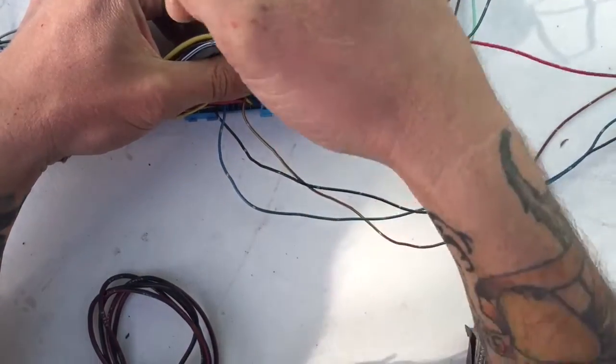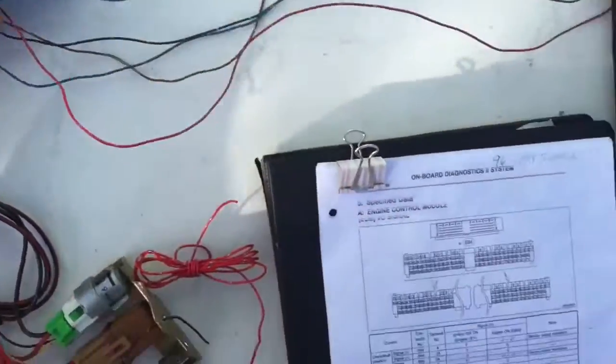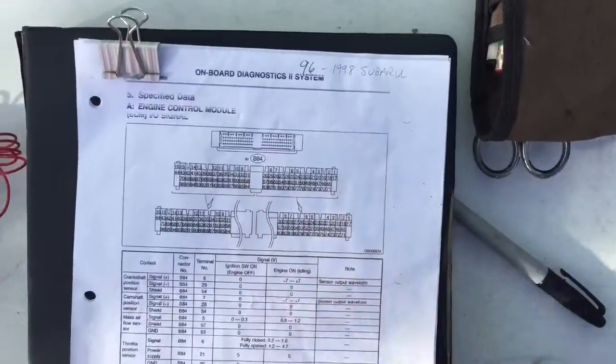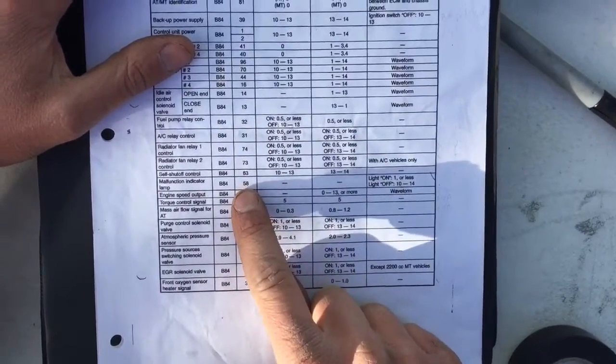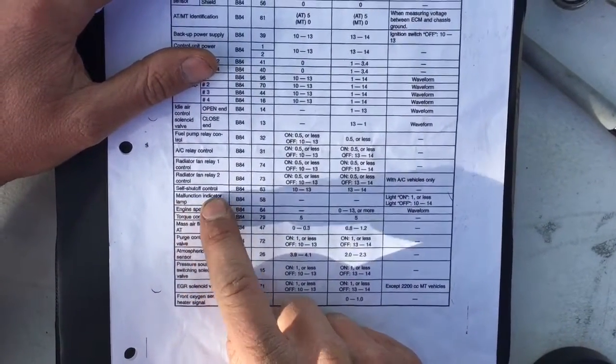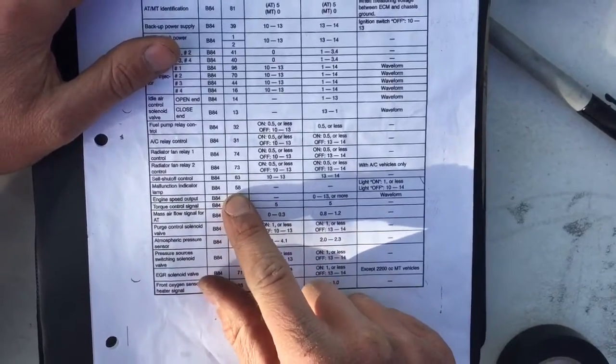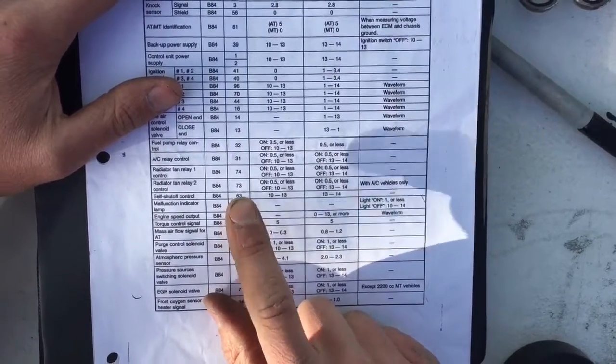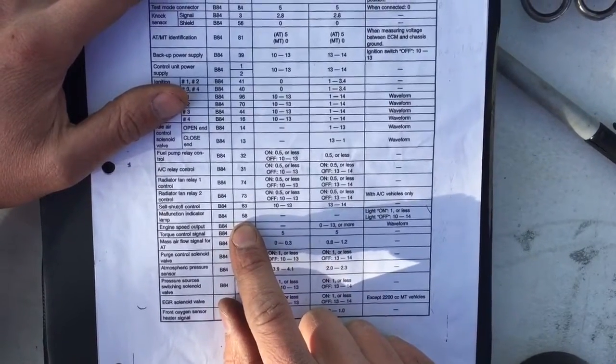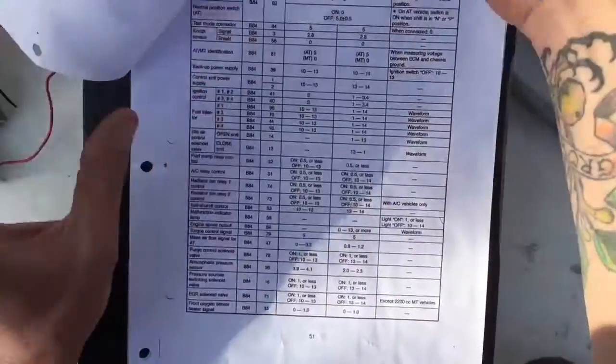That's pin 58. Pin 58 is the malfunction indicator lamp, also known as a check engine light. So we're going to cut this about a foot. The reason being, this is an OBD2 system.